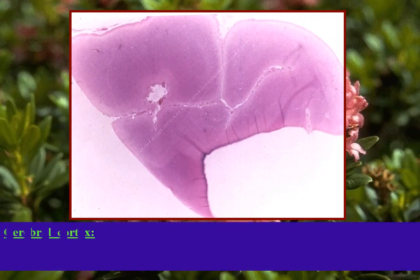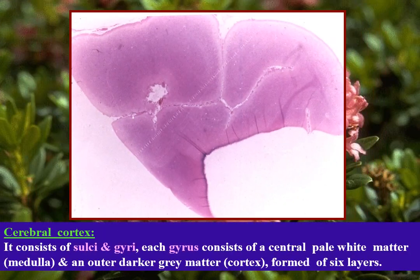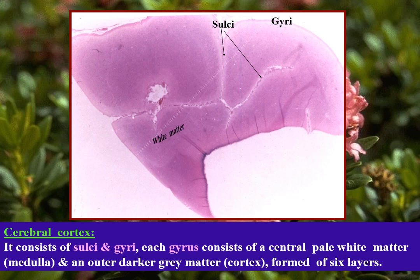Cerebral cortex — it consists of sulci and gyri, each consisting of a central white matter medulla and an outer gray matter called the cortex.